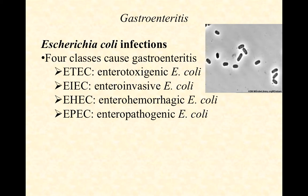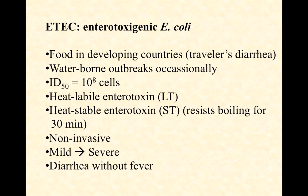Clinically, there are four different classes that can cause gastroenteritis. You'll see these abbreviations even in the news: ETEC — enterotoxigenic E. coli; EIEC — enteroinvasive E. coli; EHEC — enterohemorrhagic E. coli; and EPEC — enteropathogenic E. coli. There may be a couple more added to this list, but these four are relatively common and it's important to understand the similarities and differences between them.